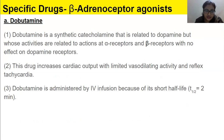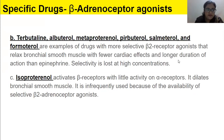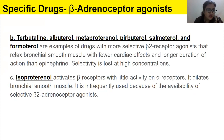Dobutamine is administered by IV infusion because of its short half-life of just two minutes. Then we have drugs such as terbutaline, which are examples of drugs with more selective beta-2 receptor agonist activity that relax bronchial smooth muscles with fewer cardiac effects.